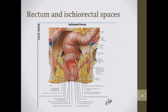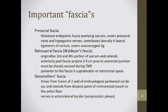The presacral fascia is a thickened endopelvic fascia overlying the sacrum covering the presacral veins, hypogastric nerves, and contributing laterally to the lateral ligaments of the rectum. The retrosacral fascia — also known as Waldeyer's fascia — originates at S3–S4, extends anteriorly to the posterior fascia propria 3–4 cm proximal to the anorectal junction. Clinically, this must be sharply divided during posterior total mesorectal excision (TME) dissection.